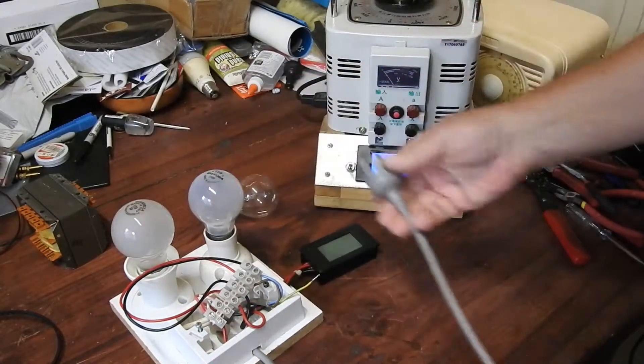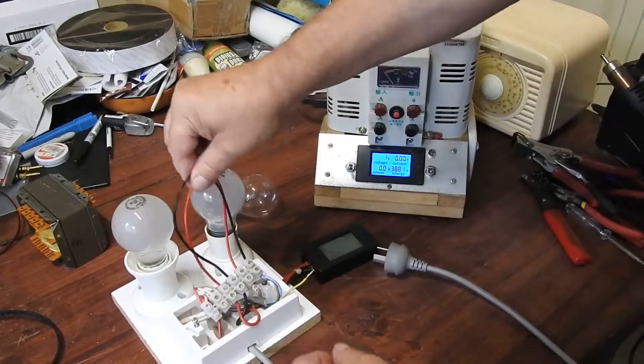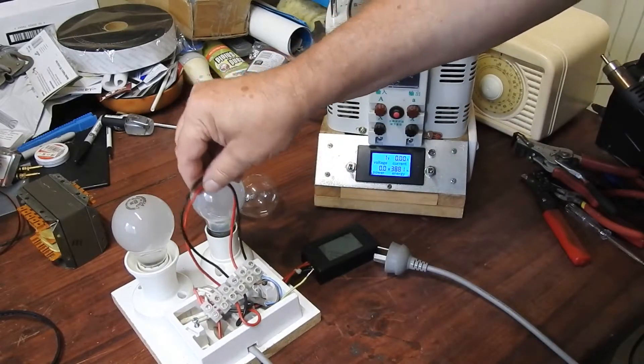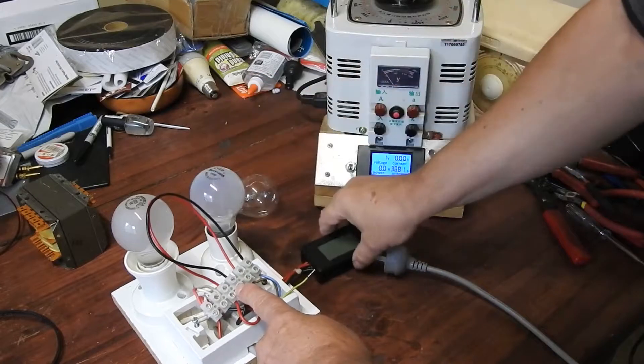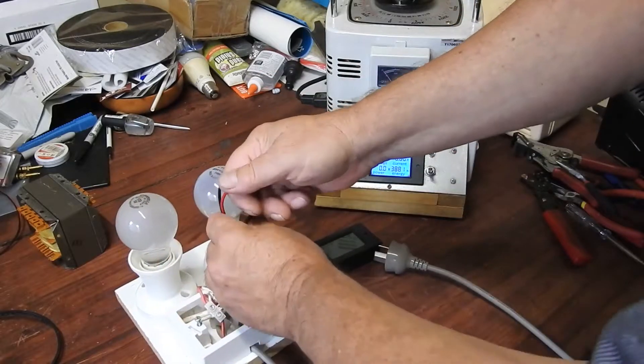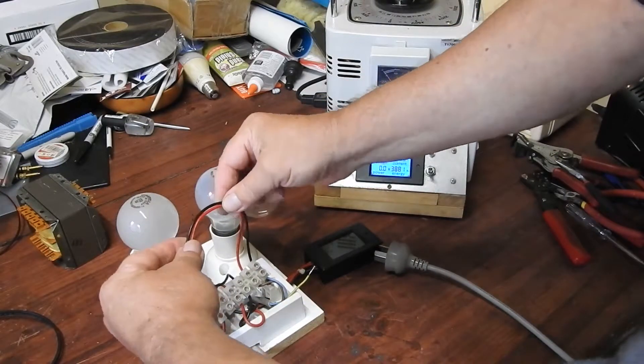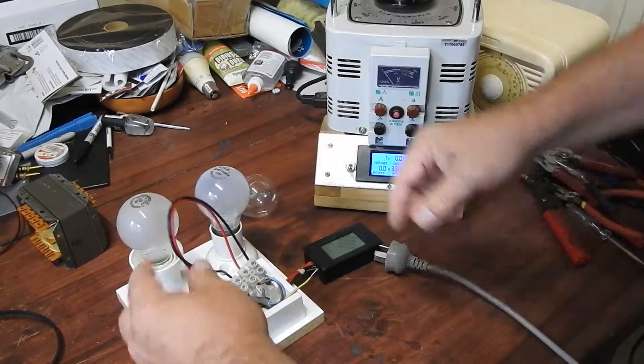The output from the Variac comes in here, goes to these two terminals. Now I've looped them back, but this is where the isolation transformer would go. It goes into the meter and then out to the load. So the next thing to do is to actually stick in two transformers in here. So that's what I'm going to do now.